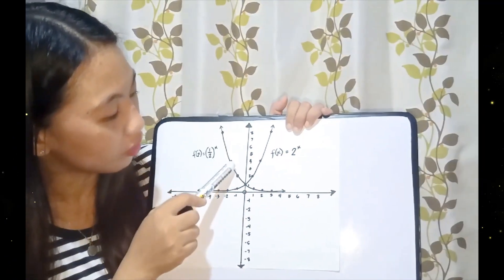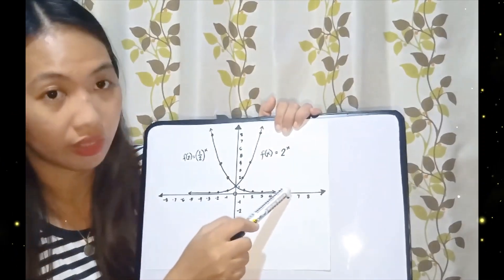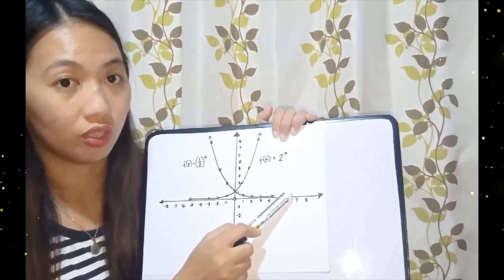From here, going down to the right, that is what we call the decreasing function.